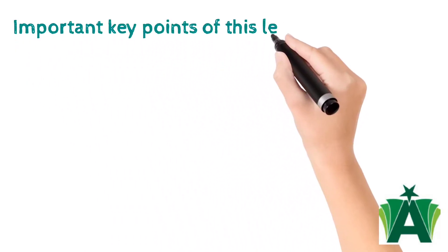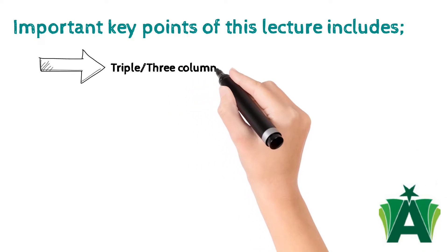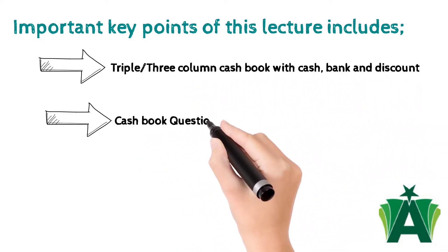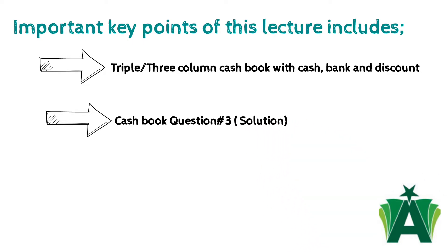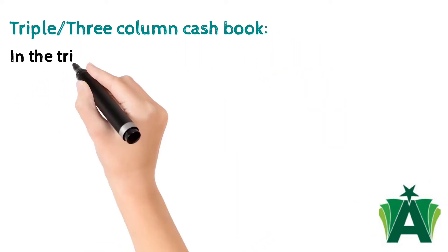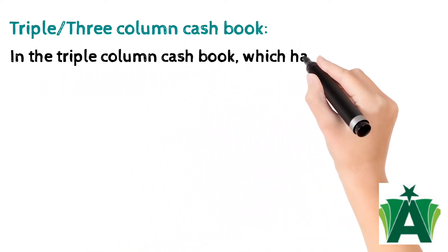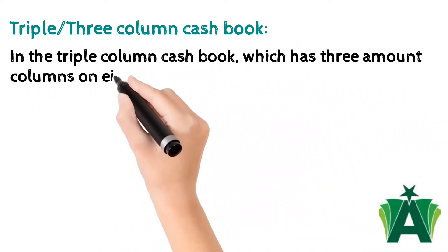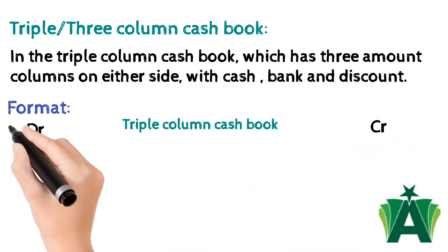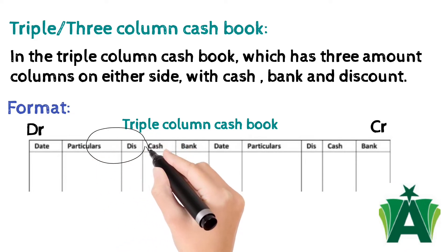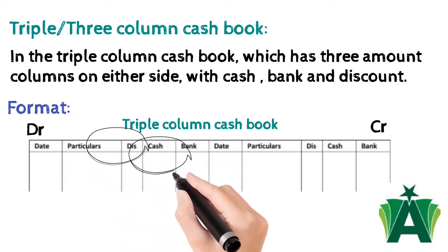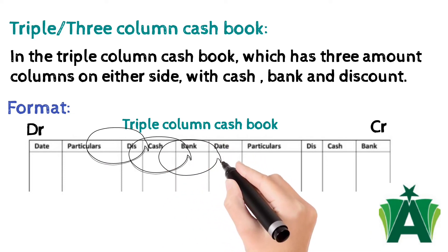Important key points of this lecture include the triple or three column cash book — question number three solution. In the triple column cash book, there are three amount columns on either side with cash, bank, and discount format. The left hand side is the debit side and the right hand side is the credit side. On the debit side, the first amount column is discount, the second is cash, and the third is bank.